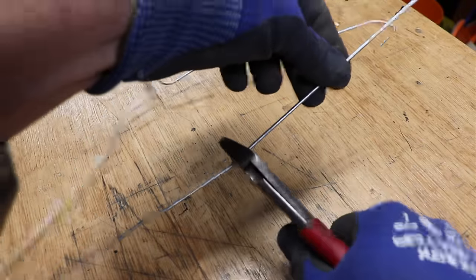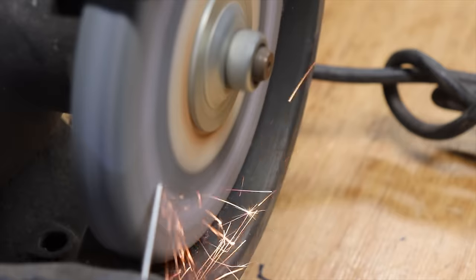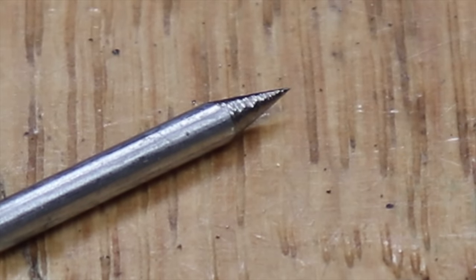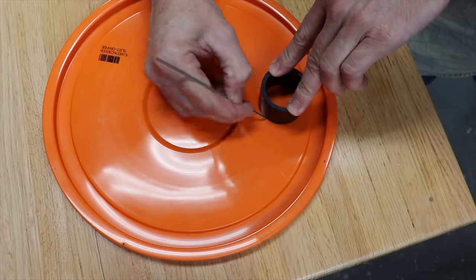And if you want to make a scriber just cut a piece of coat hanger, put it in your drill, hold it against the grinder with the drill going, and you've made a simple scriber. Then rotate the lid and do the same on the opposite side.